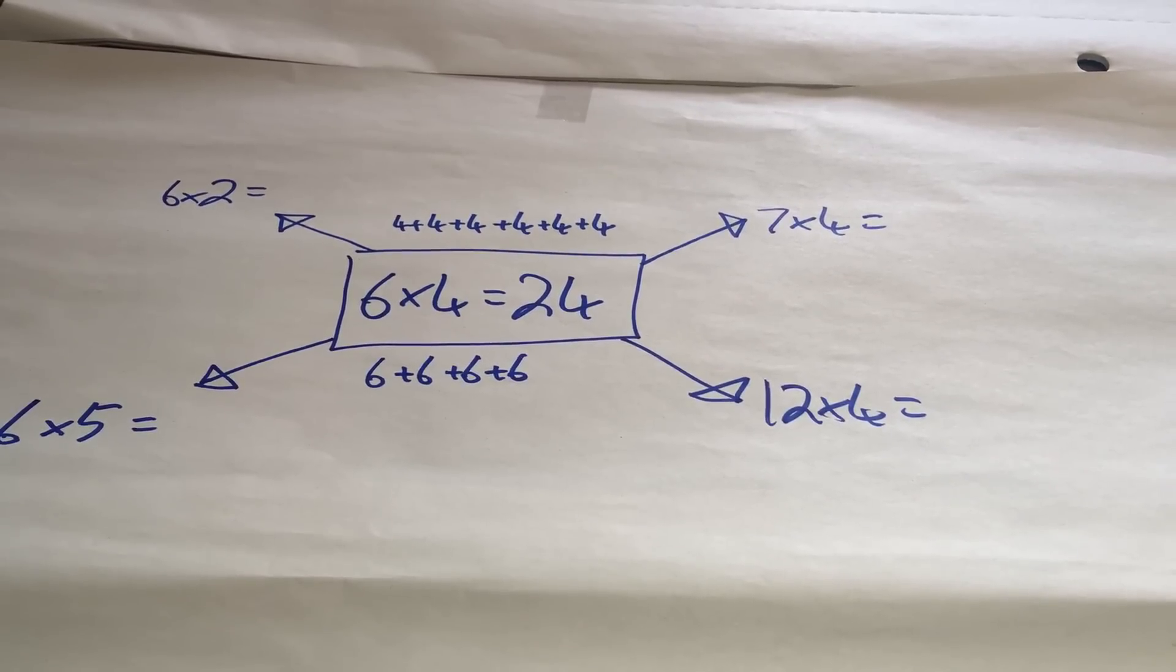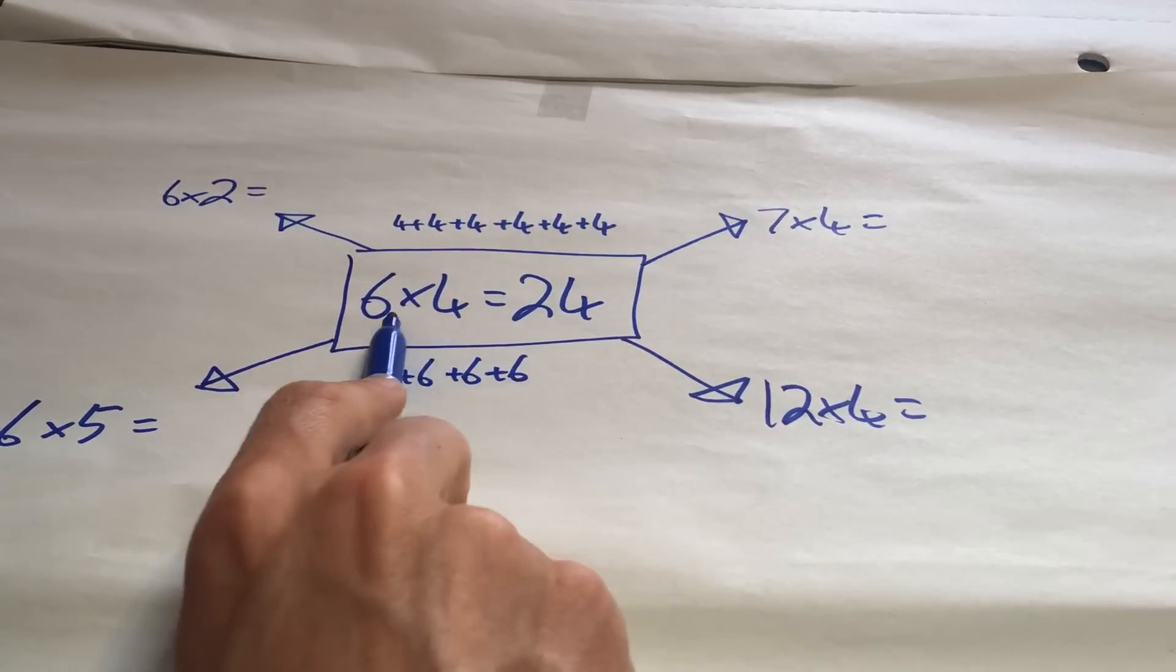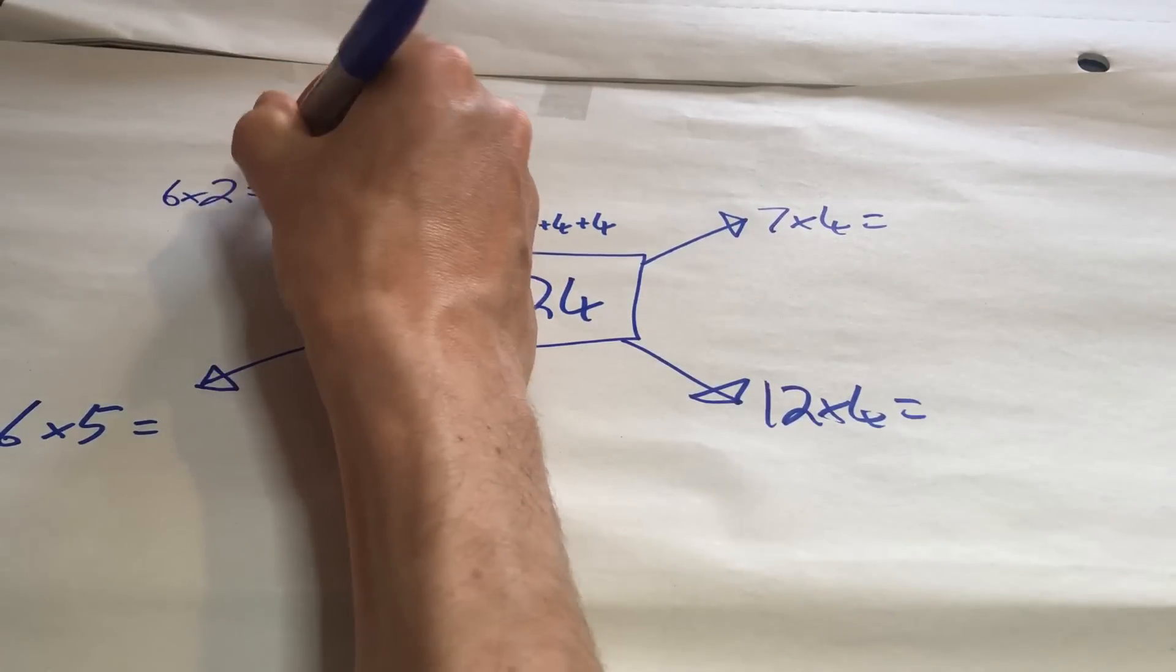Well, let's have a think about how those calculations link. 6 multiplied by 2 compared to 6 multiplied by 4. Well, the 6 is the same, but 2 is half of 4. So, it will be half as much, 12.